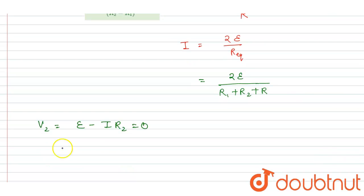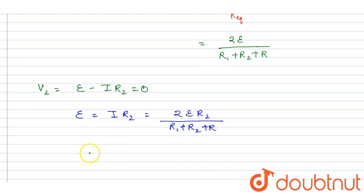Right, so if it is zero, I'll make this zero. So I'll write E equals I times R2. So it will be 2E times R2 in division, it will be R1 plus R2 plus R. From here I can write down, if you see, this E will get cancelled out.